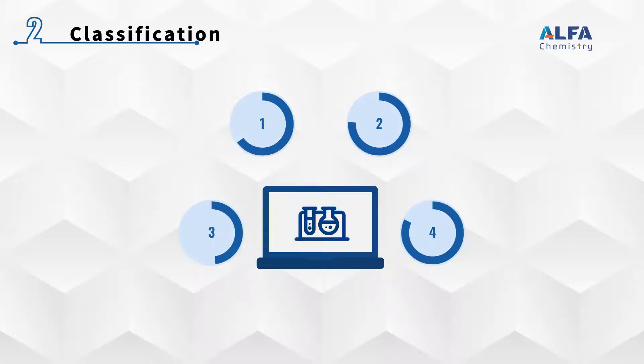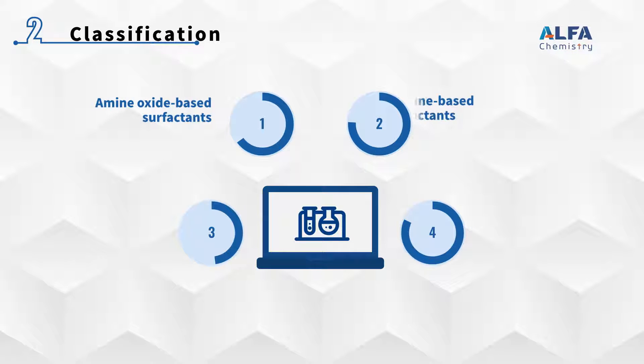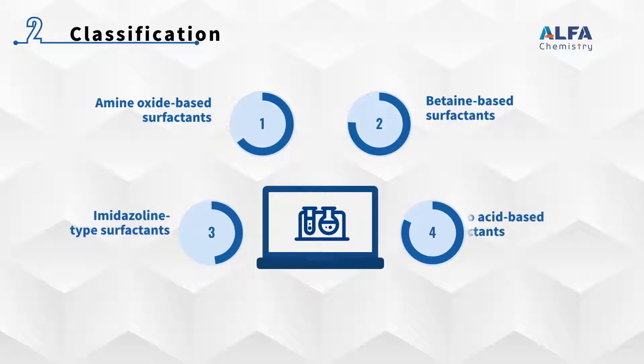We classify amphoteric surfactants into four main categories based on their chemical structure.